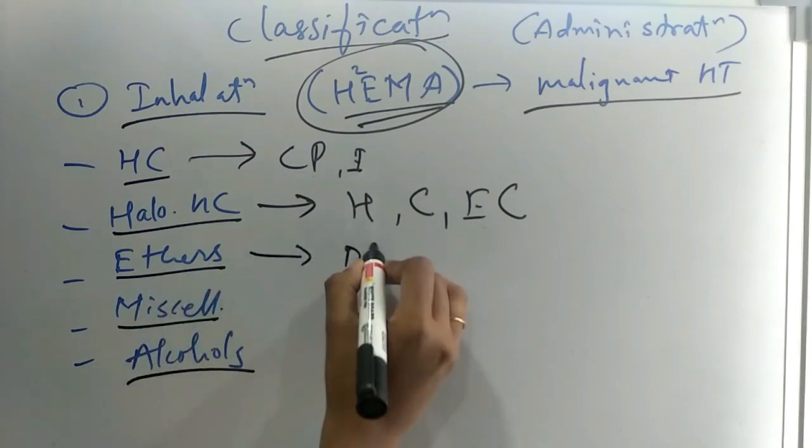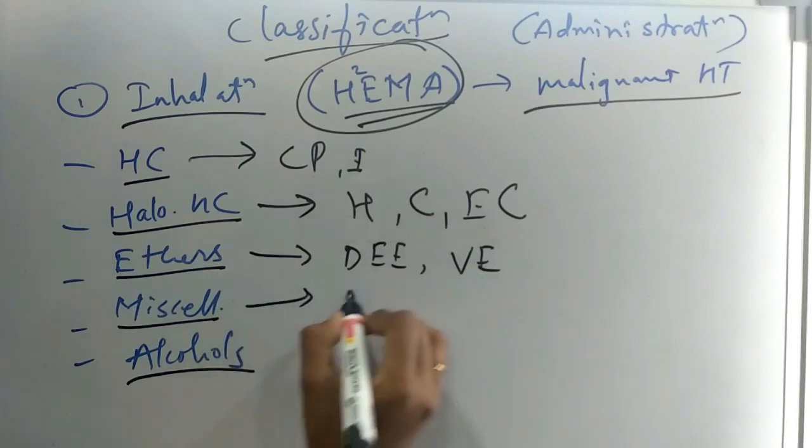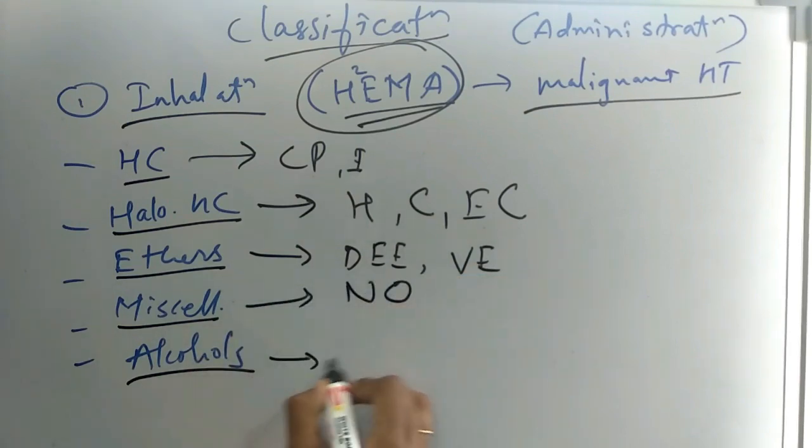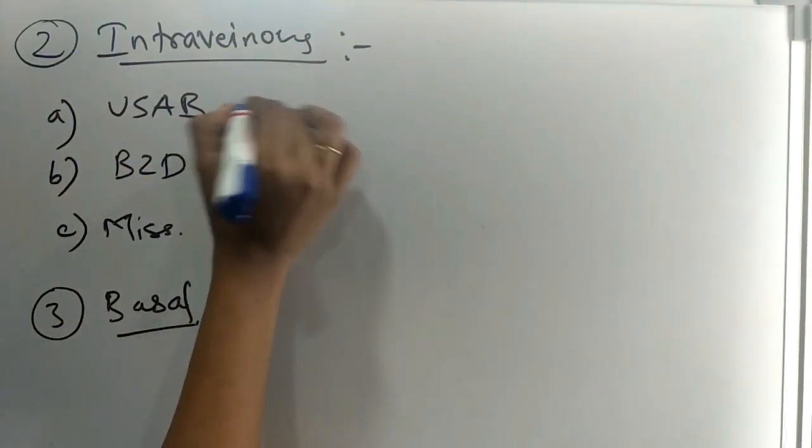Ethers include diethyl ether and vinyl ether. Miscellaneous include nitrous oxide. Alcohol include trichloroethanol. The second route is intravenous.